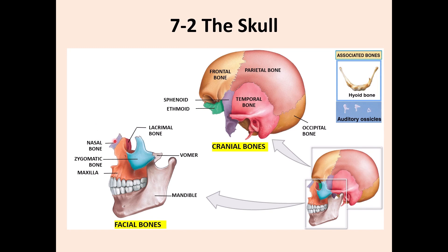Of the facial bones, the nasal bone is paired - one on each side. The lacrimal bone is also paired. Maxilla is paired. Zygomatic bone is also paired. The ones that are unpaired, meaning only a single one, are the vomer and mandible, or lower jaw.